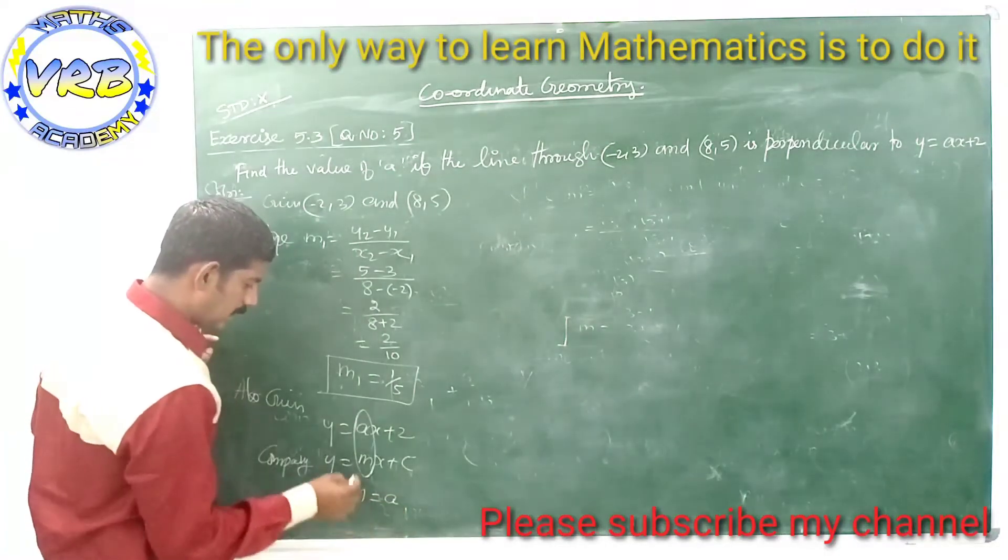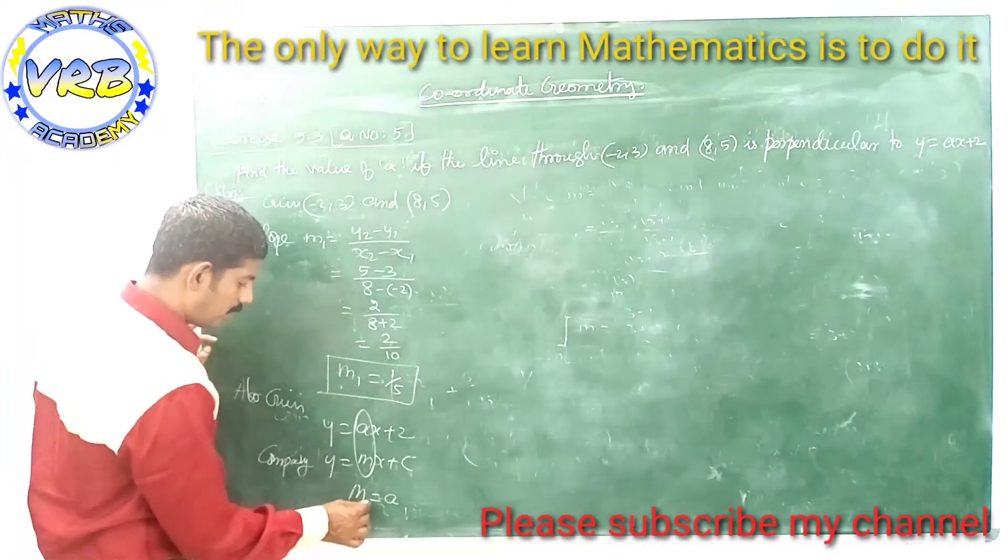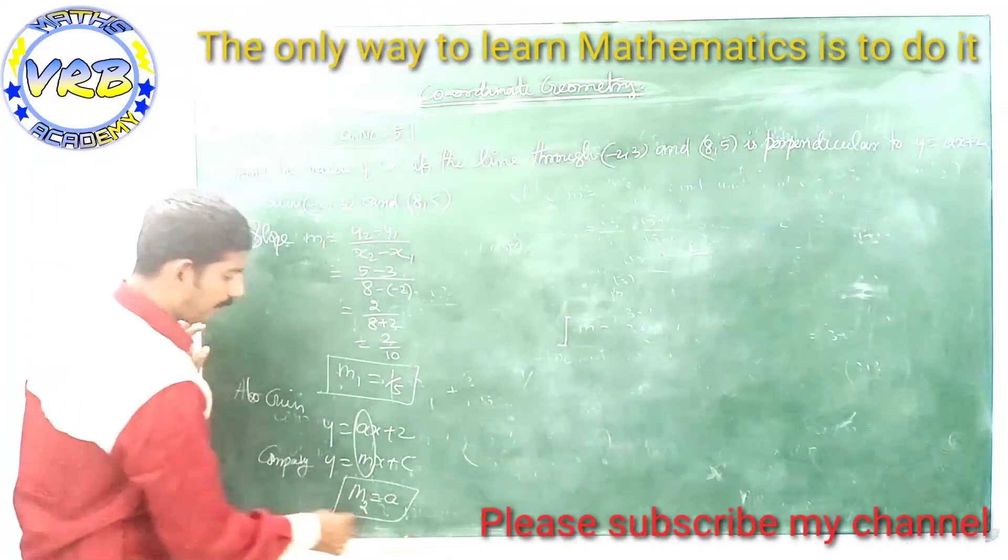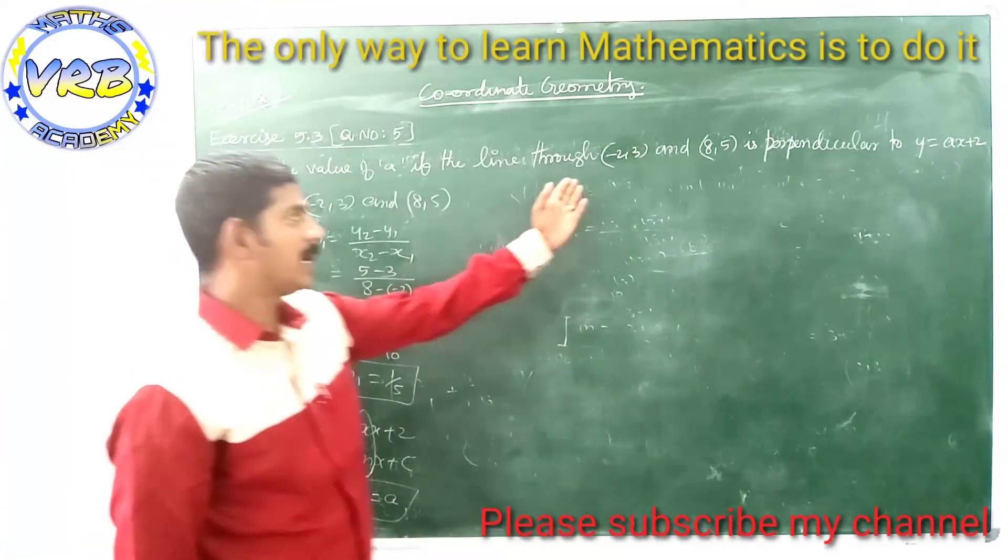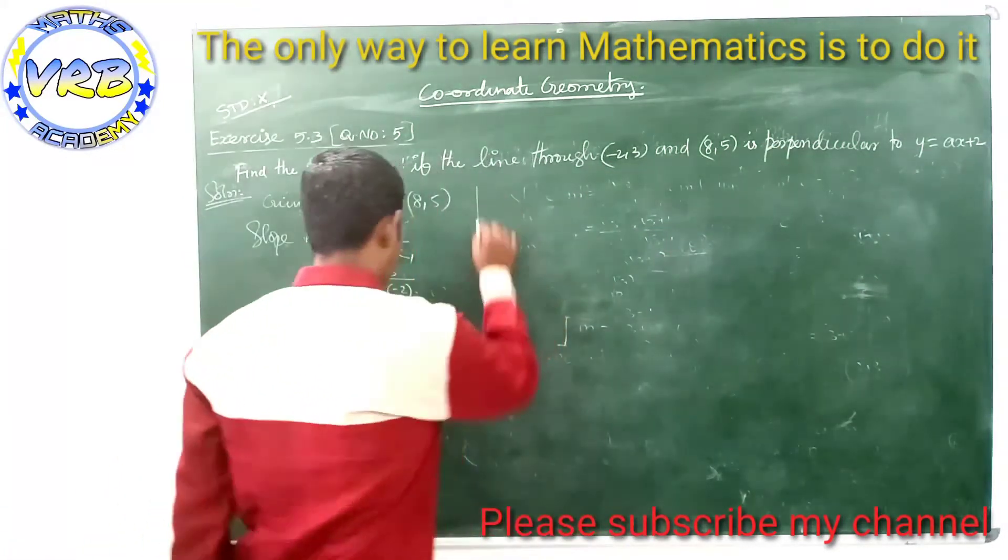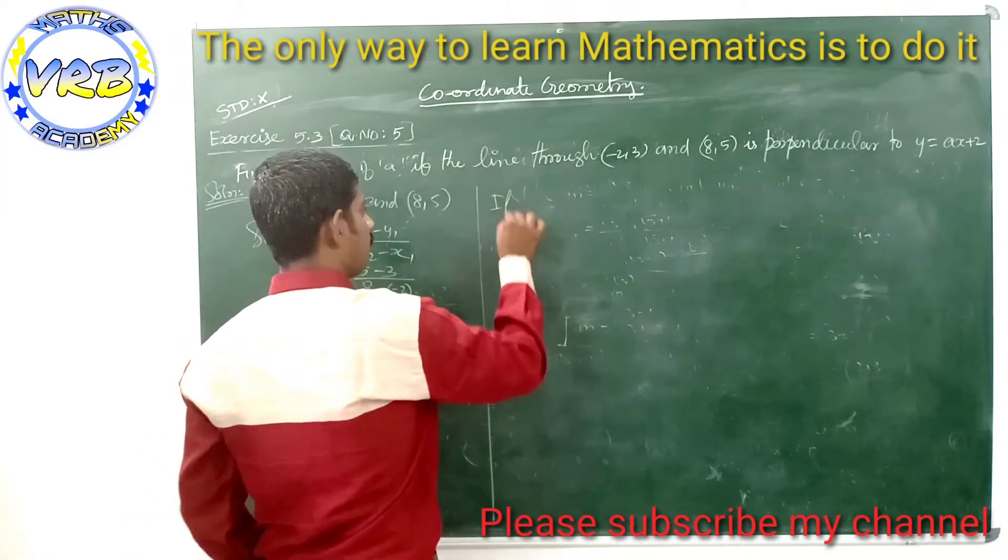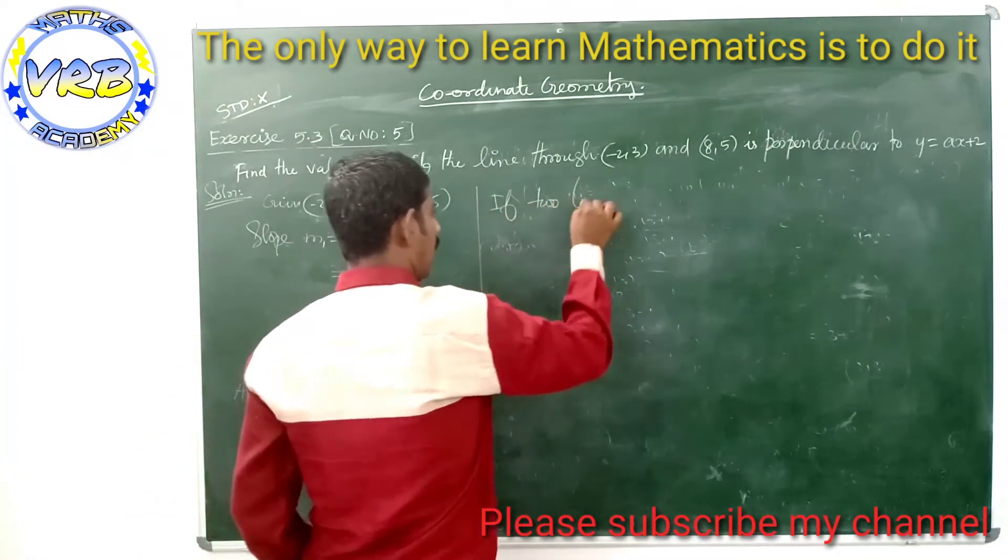These two lines are perpendicular, so our condition is: when two lines are perpendicular, then m1 × m2 = -1.